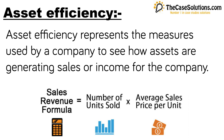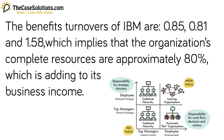Asset efficiency represents the measures used by a company to see how assets are generating sales or income. Low overall revenue implies high resource turnover while high net revenue has low resource turnover. This implies the estimation of the organization's business revenue relative to the estimation of its benefits. The asset turnovers of IBM are 0.85, 0.81, and 1.58, implying that the organization's total resources are approximately 80% contributing to its business revenue.